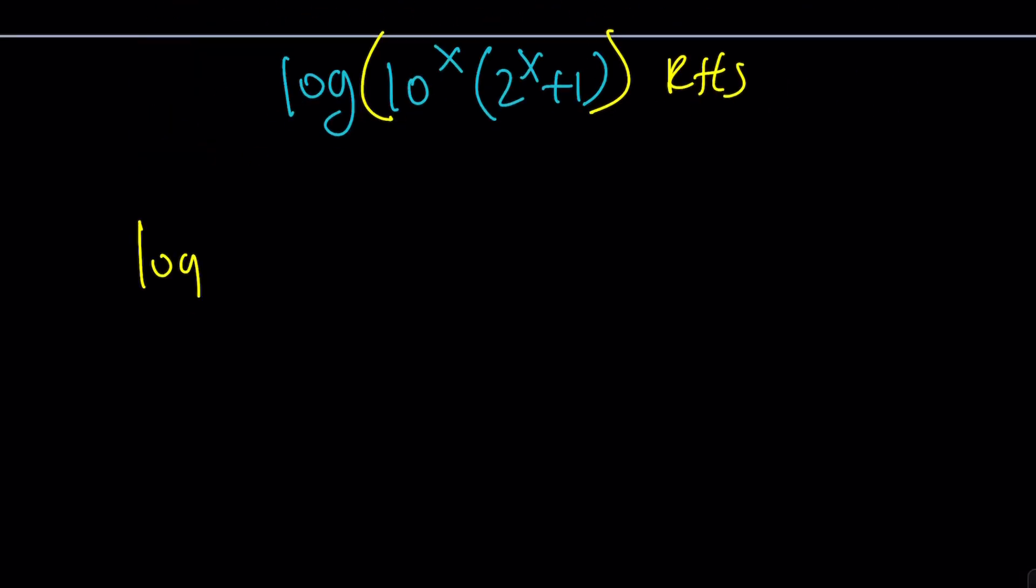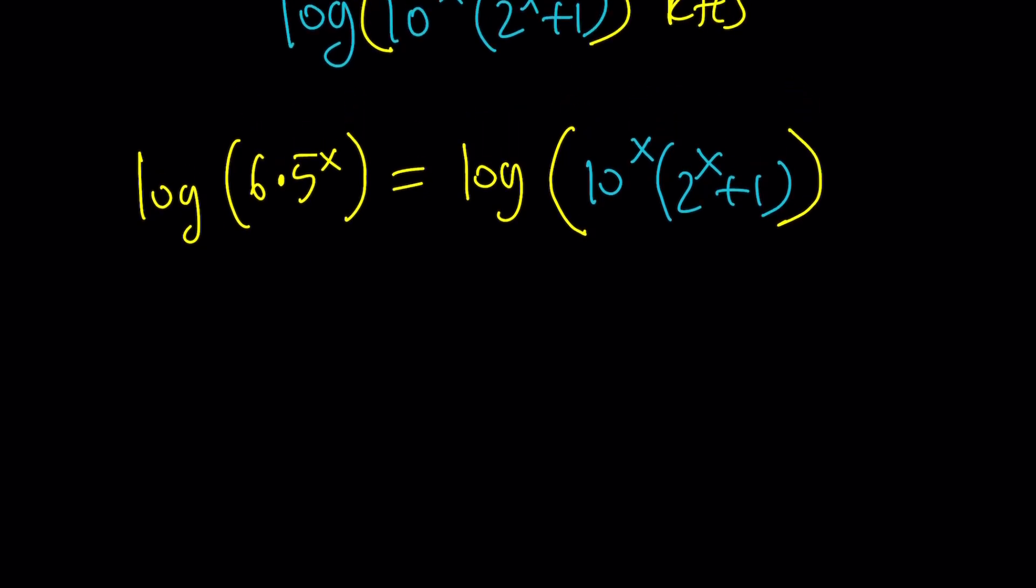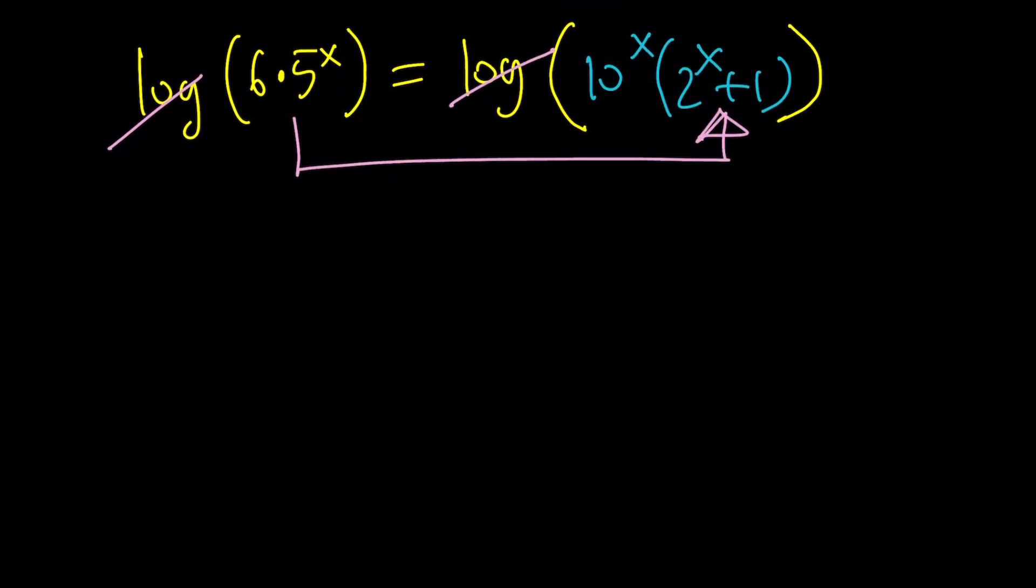This is the left-hand side. Let's put it together. We have log 6 times 5 to the x equals log 10 to the power x times 2 to the power x plus 1. We got two logs, so we can cancel out the logs. What does that give us? An exponential equation. Exponential equations are amazing, and this one comes from a logarithmic equation, which makes it even more amazing.